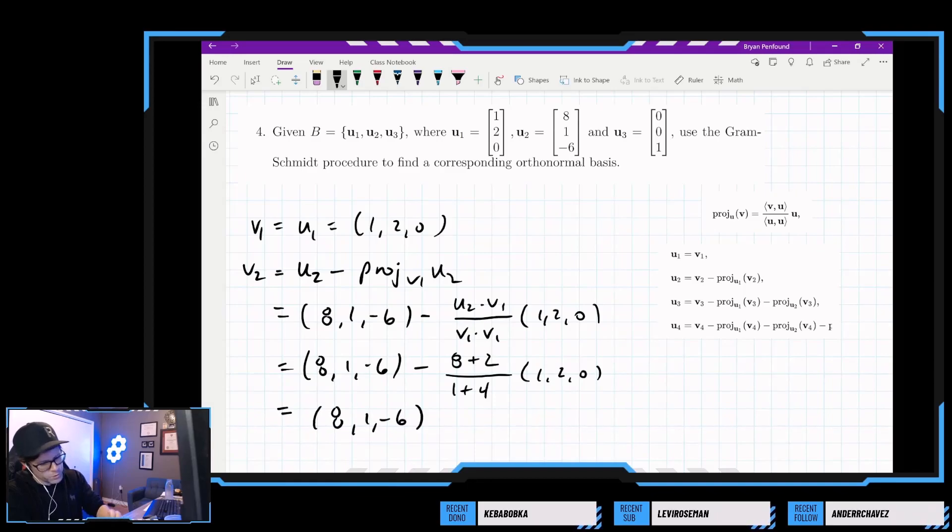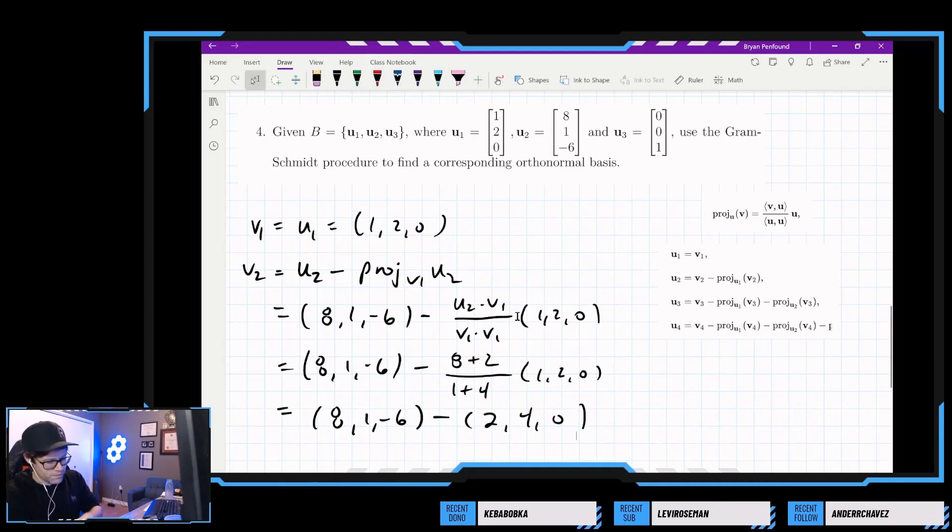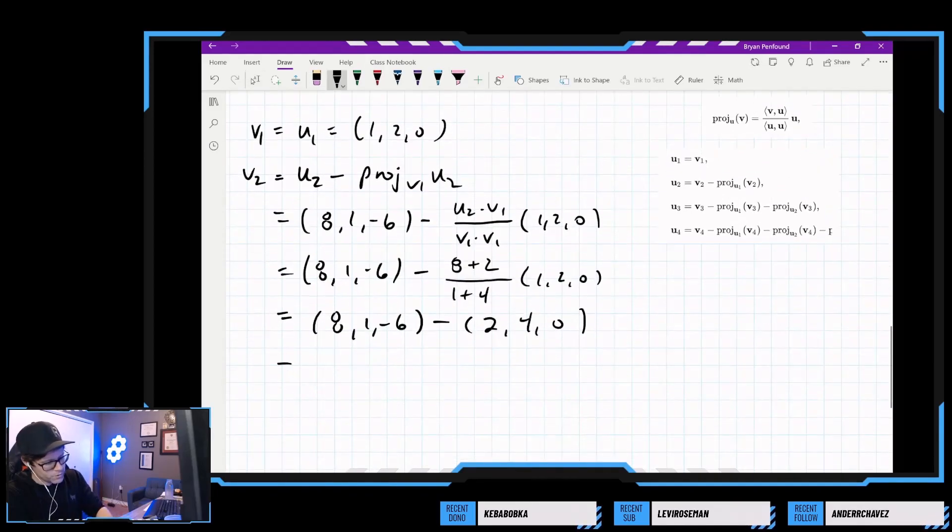Sanity check me to make sure that I'm doing this correctly. So this should be 10 over 5, which is 2. So we need to subtract 2, 4, 0 from this vector. So that means the final vector we should get is 6, negative 3, negative 6.